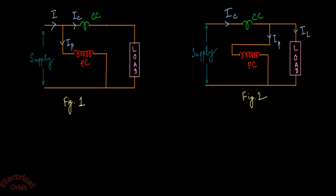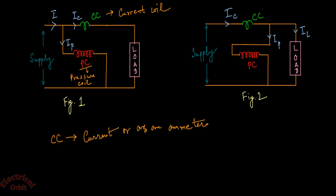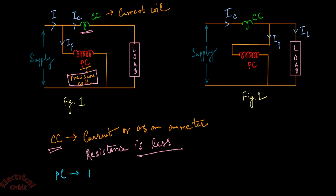There are several components in a wattmeter connection. CC means current coil and PC means pressure coil. The current coil serves the purpose of measuring current, similar to an ammeter. Its resistance is small because it needs to allow the full current coming from the supply system to pass through it, so resistance should be low — that's why in the diagram there are fewer coil turns.